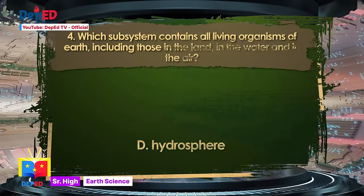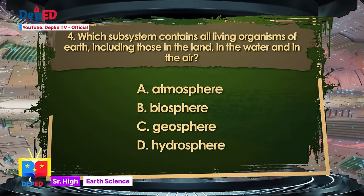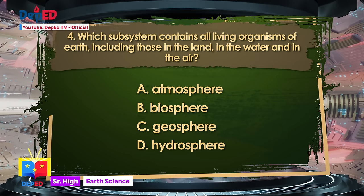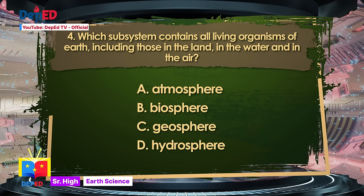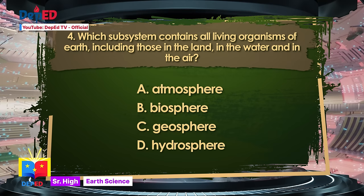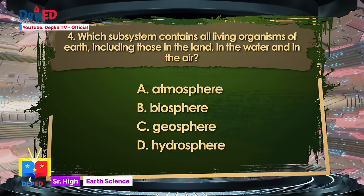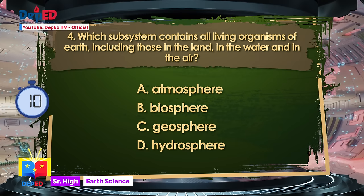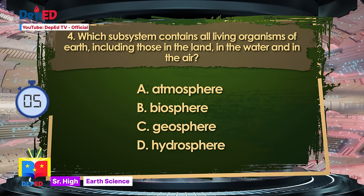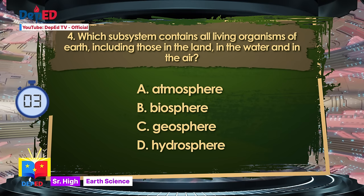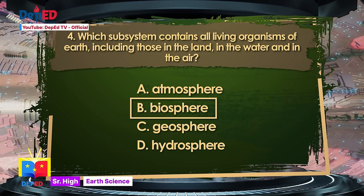Number 4. Which subsystem contains all living organisms of Earth, including those in the land, in the water, and in the air? A. Atmosphere. B. Biosphere. C. Geosphere. D. Hydrosphere. The answer is B — Biosphere.